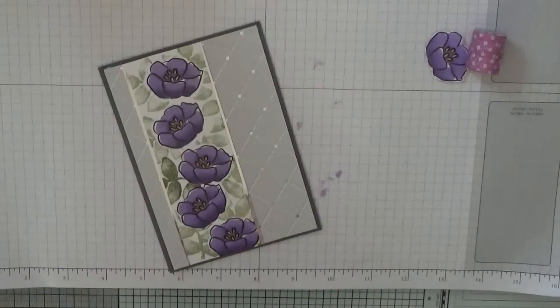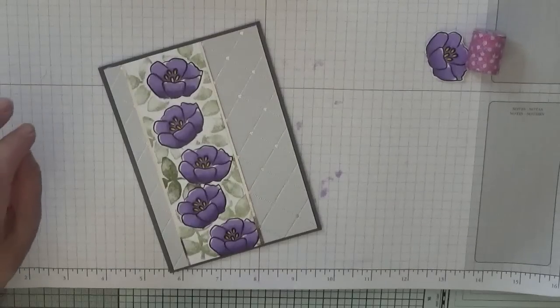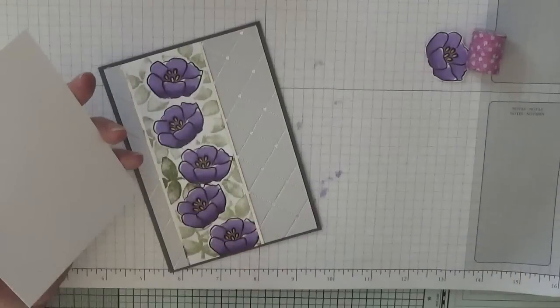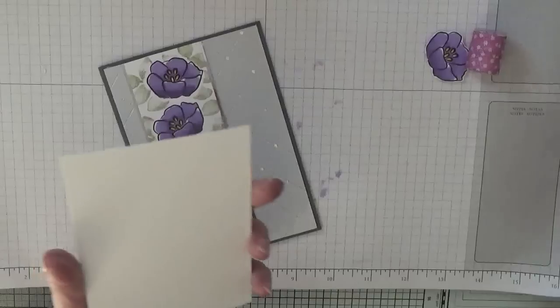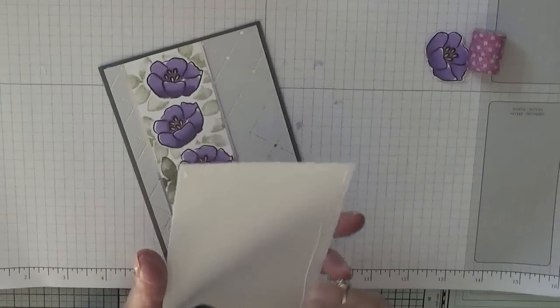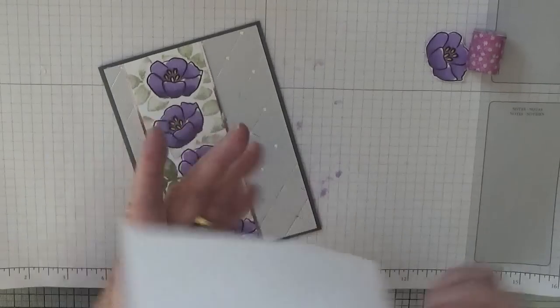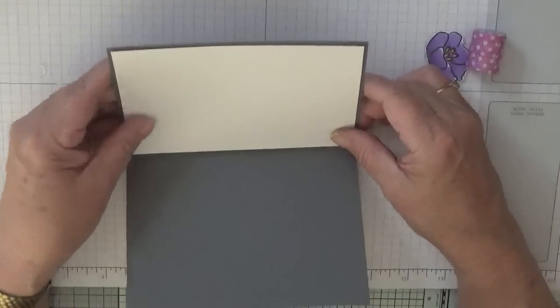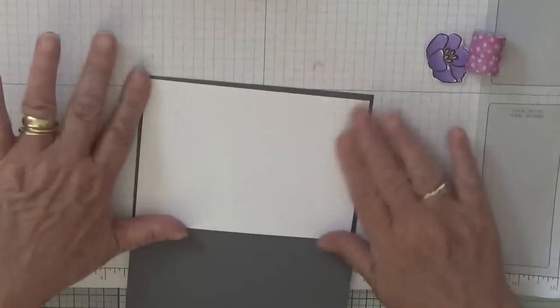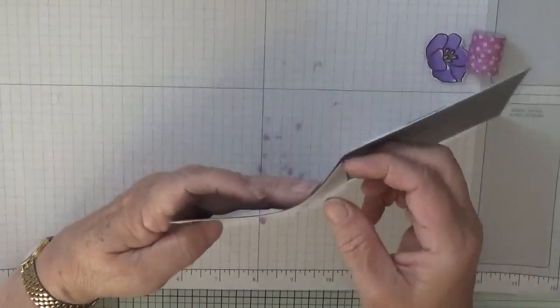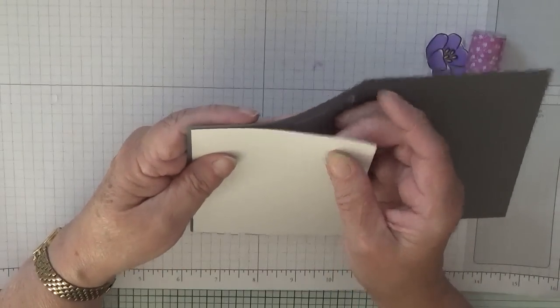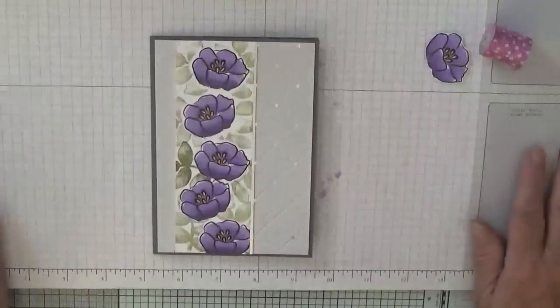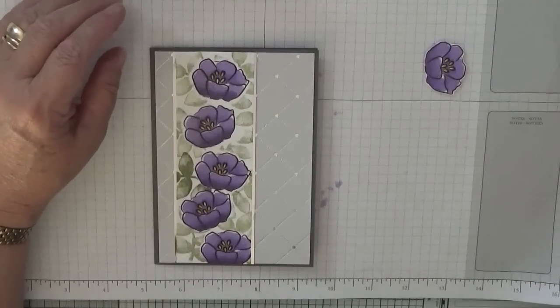Right, I need to—I didn't do anything on the inside. So let me just get a blank piece and put that inside. Not very straight. Better. And now we can put our flowers on. I've already put dimensionals on the back of these.